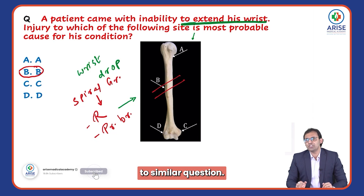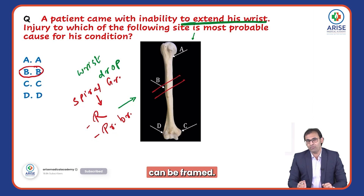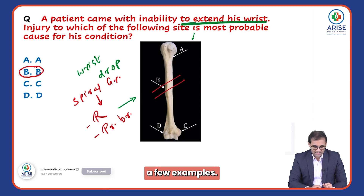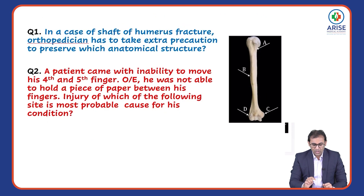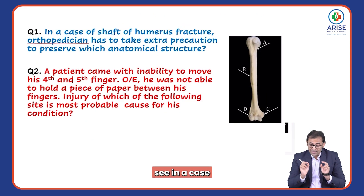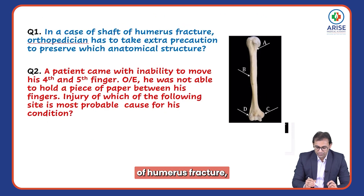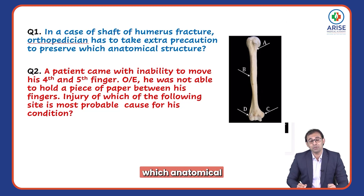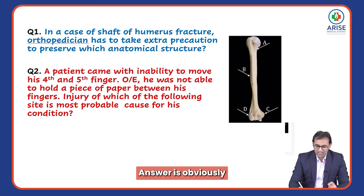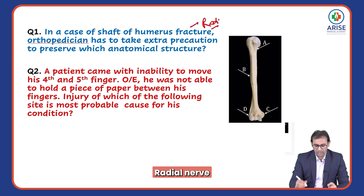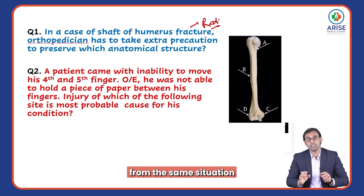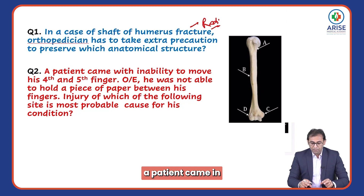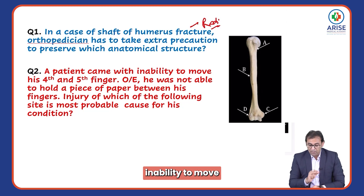From similar questions, multiple questions can be framed. First question: in a case of shaft of humerus fracture, the orthopedician has to take extra precaution to preserve which anatomical structure? The answer is obviously the radial nerve.